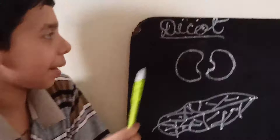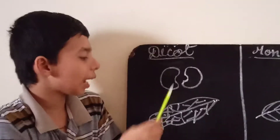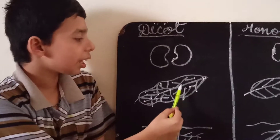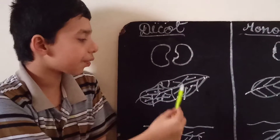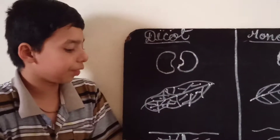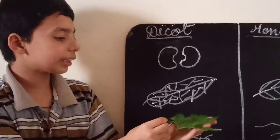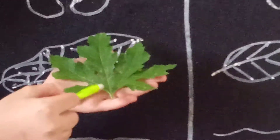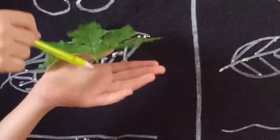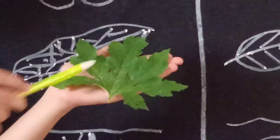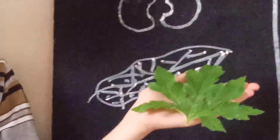Now I will explain how a dicotyledon plant's leaf will be. It will have netted veins — one main vein in the middle, side veins branching from it, and further veins from those. I have taken a bitter gourd leaf as an example. It has netted veins: one vein in the middle, side veins, and from those other veins arise, forming a netted-like structure.